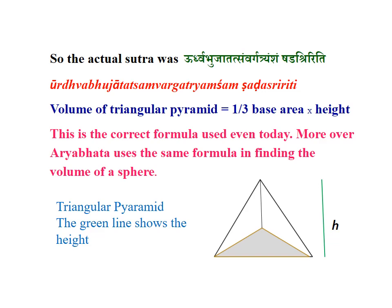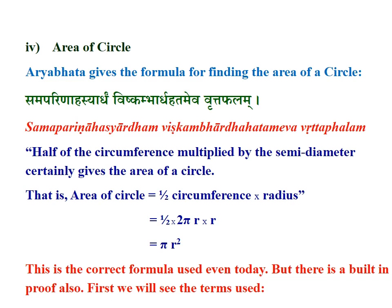Fourth, the area of a circle. Aryabhata gives the formula: 'Samapariṇahasya ardhaṃ viṣkambhārdha-hataṃ eva vṛttaphalam.' Half of the circumference multiplied by the semi-diameter certainly gives the area of a circle. That is, area of circle equals half circumference into radius, which equals half × 2πr × r. Half and two cancel, giving πr². That is the correct formula used even today.